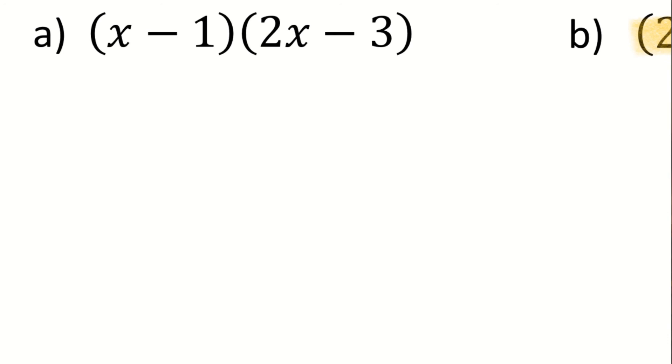So for A, this is a binomial times a binomial. So I have two things being multiplied by two more things. So I can represent it with this generic area model. The first thing I'll write across the top is there is an x and then there is a negative 1. And then down on the left-hand side you can see there is a 2x and there is a negative 3.